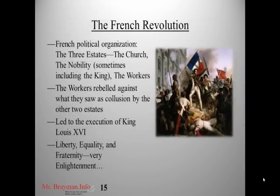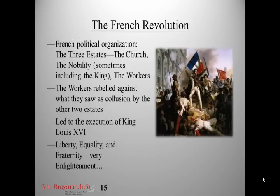The same is true of the French Revolution. Traditionally, France was organized into three estates: the church, the nobility, and the workers. The workers rebelled against what they saw as collusion between the other two estates — the church and nobility ganging up on them to hold the people down. They stormed the Bastille, took over Paris, and eventually France, and executed Louis XVI. Their motto — still the national motto of France — is liberty, equality, and fraternity, where fraternity means brotherhood. These are very Enlightenment ideas that simply would not have happened before this time period.